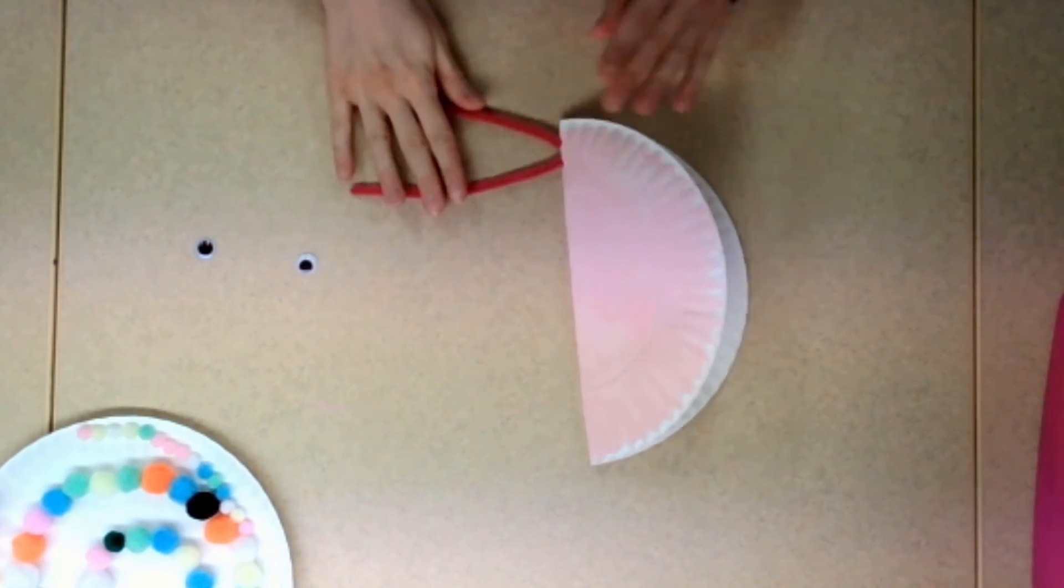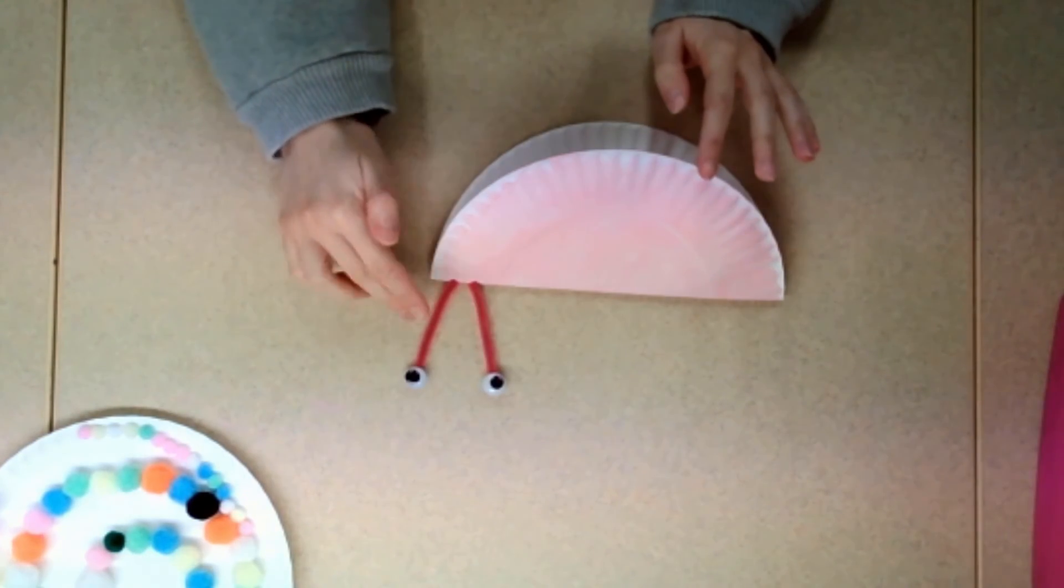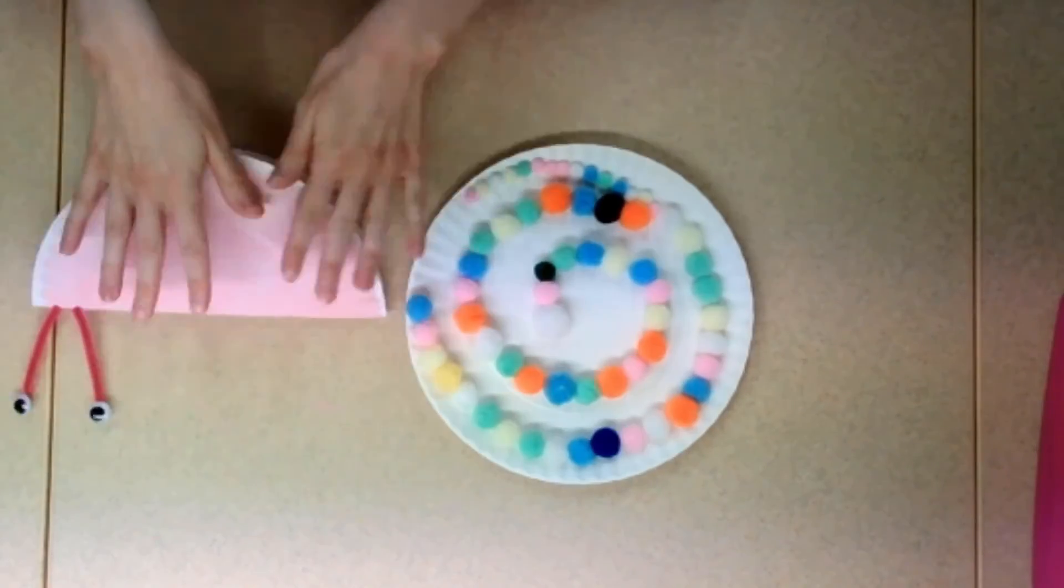Using glue, attach your googly eyes to the ends of your pipe cleaners. Set aside to dry.